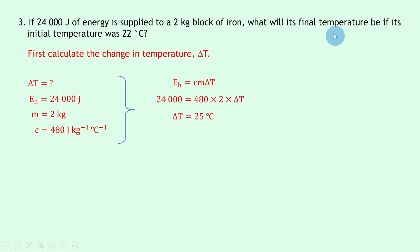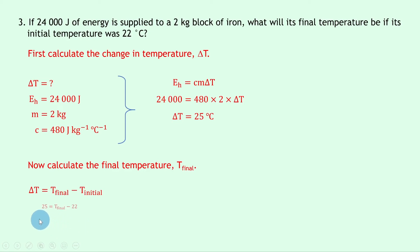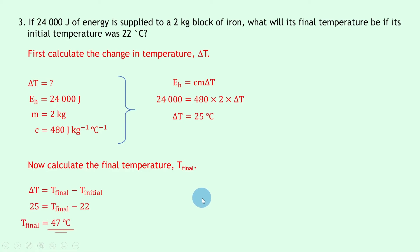However, we were asked for the final temperature, not the change in temperature, and we're given the initial temperature. So we use delta T = T_final − T_initial. Substituting in, 25 = T_final − 22, so adding 22 to both sides gives T_final = 47°C.